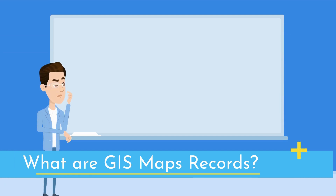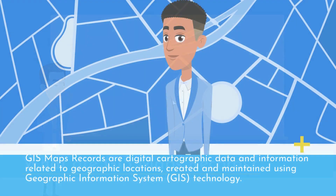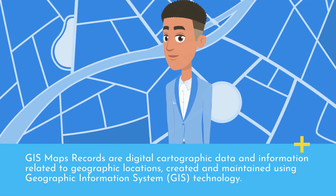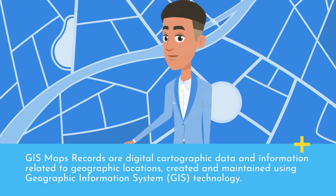What are GIS Maps records? GIS Maps records are digital cartographic data and information related to geographic locations, created and maintained using Geographic Information System technology.